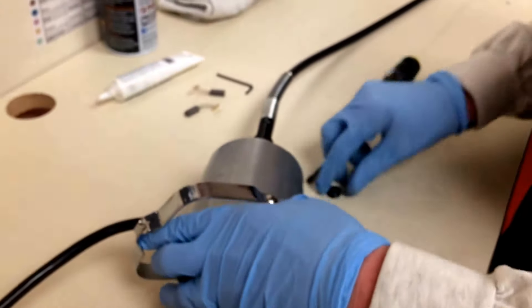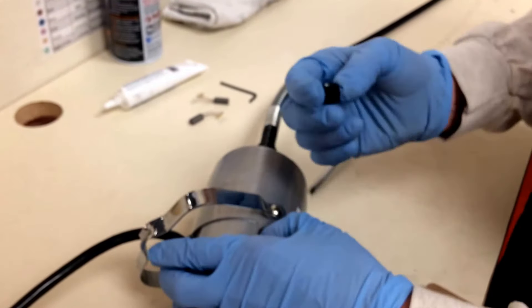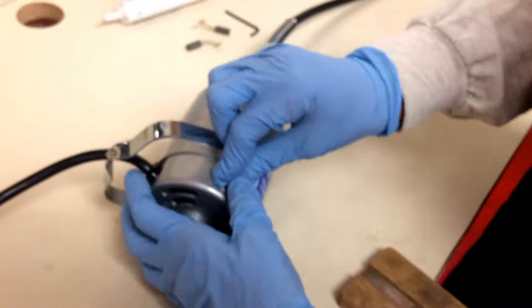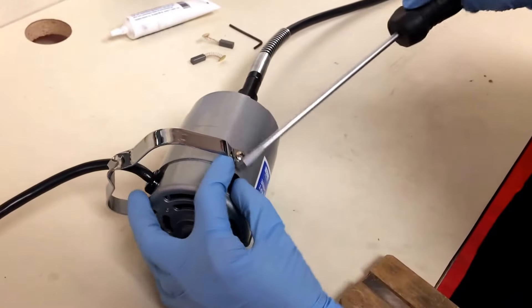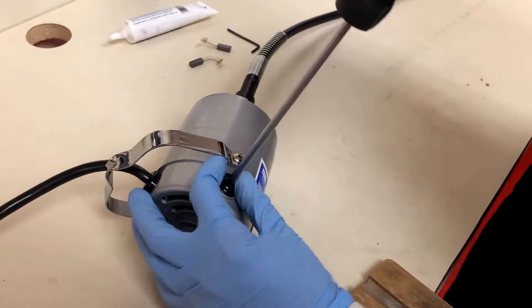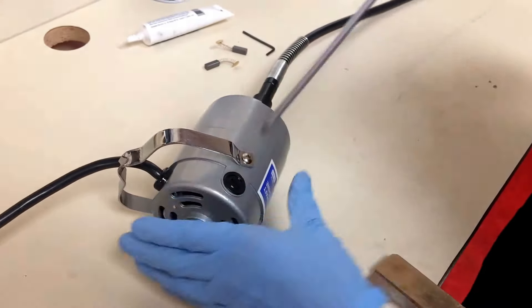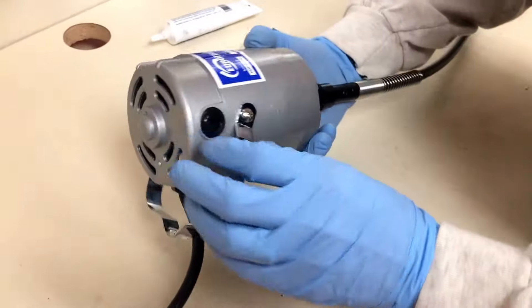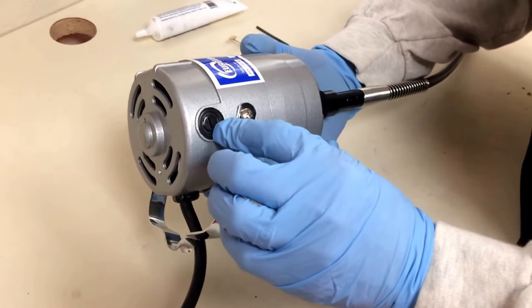So go ahead and tuck that back in. It's spring-loaded so you need to push it down in there, place the cap over it, and then go ahead and screw that back together. Now you'll want to do the same thing on the reverse side of the motor. So if you flip it over, there's your other brush cap.